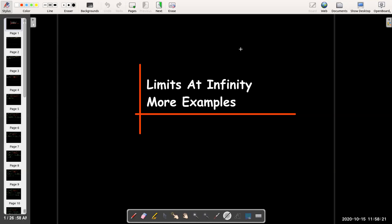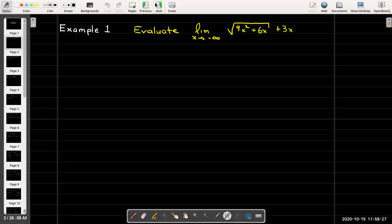In this video we're going to work out more examples where we calculate limits at infinity. In our first example we're going to calculate the limit as x approaches negative infinity of √(9x² + 6x) + 3x.